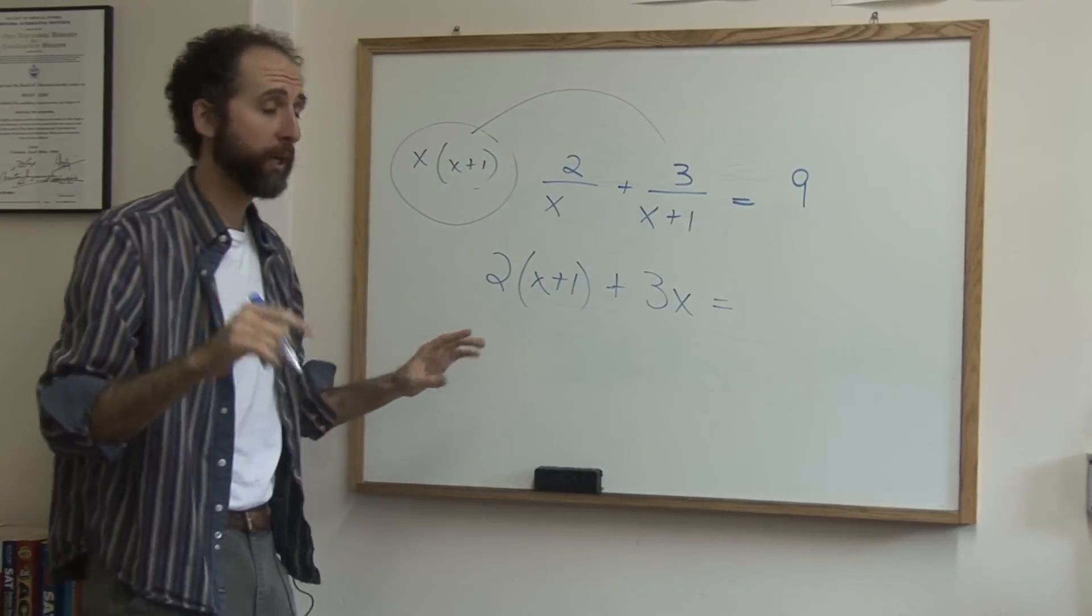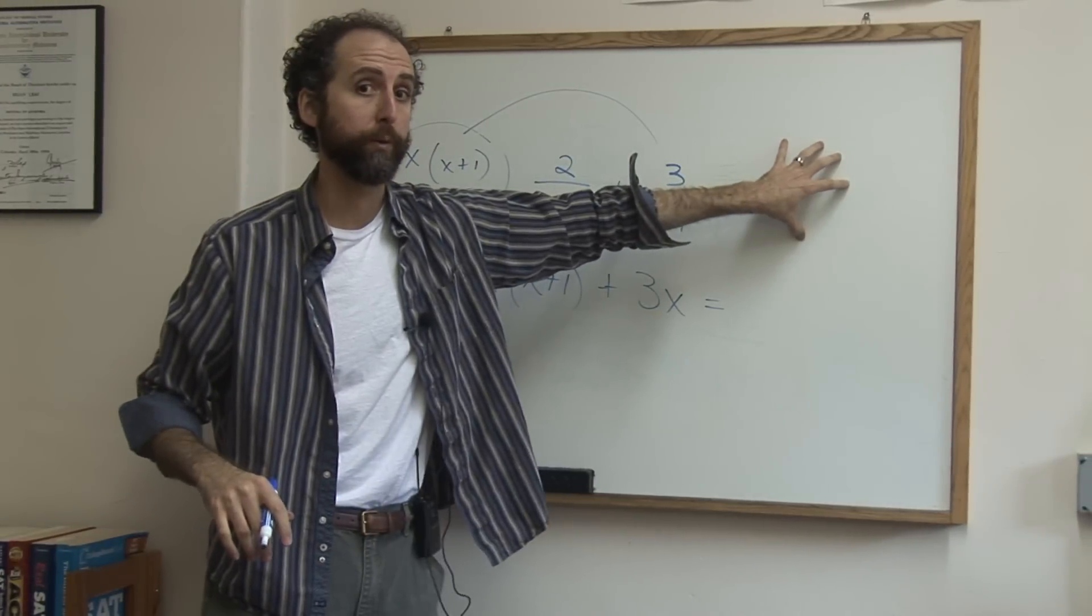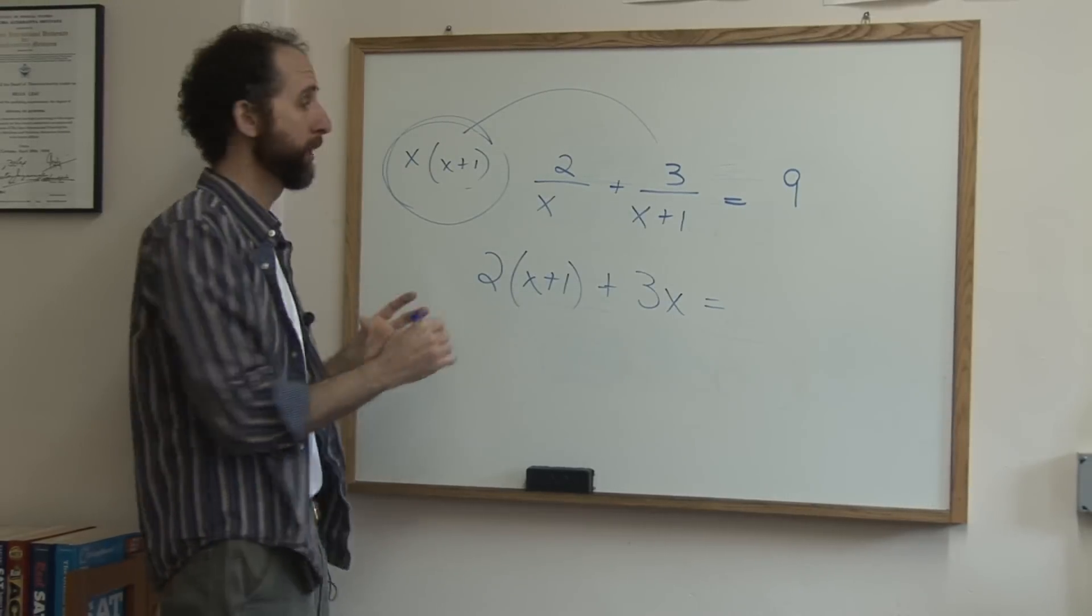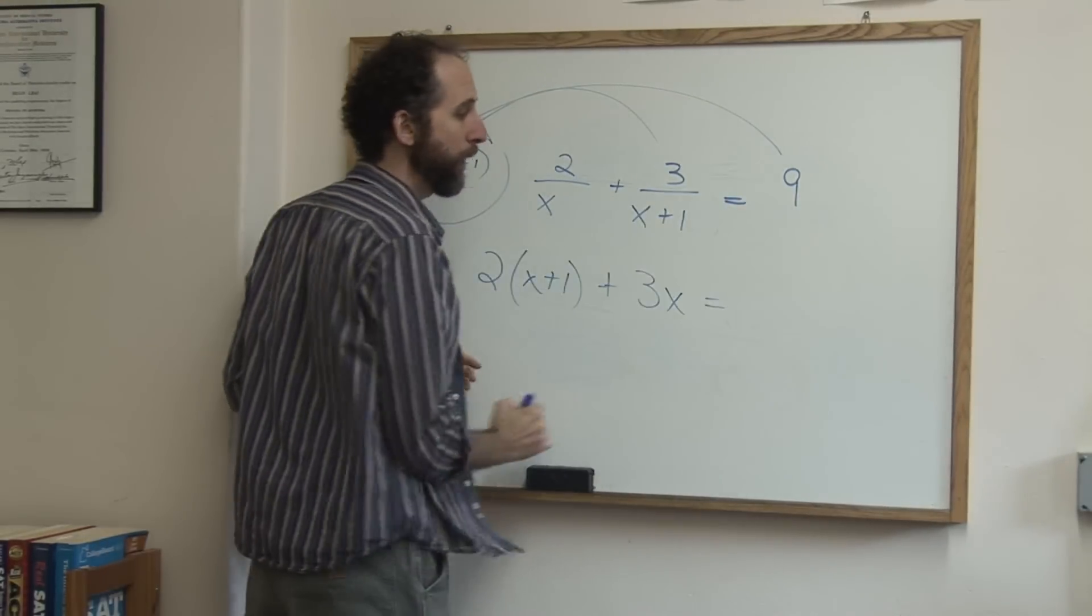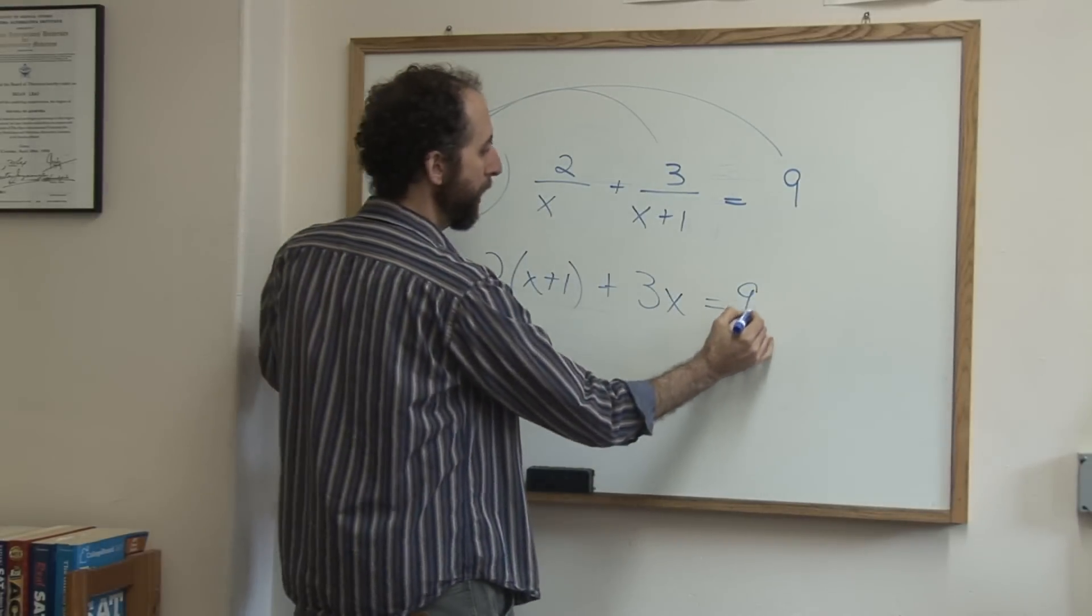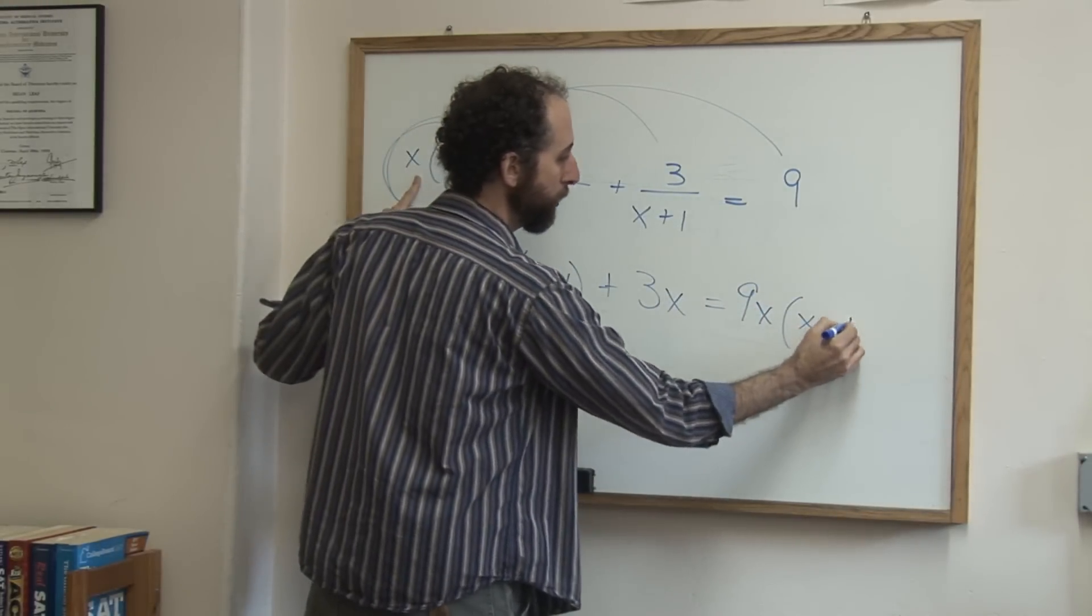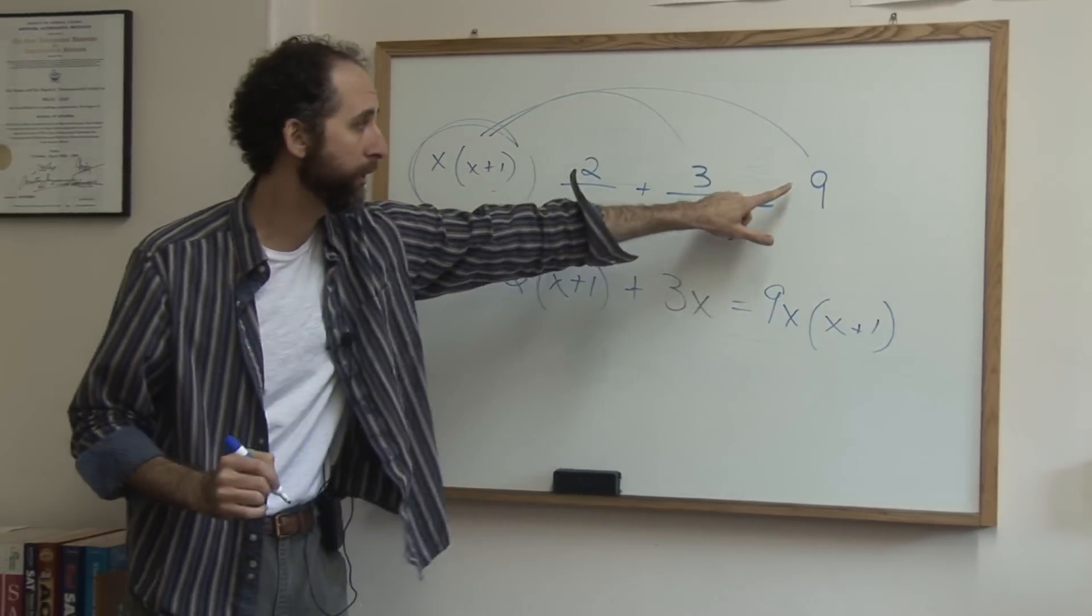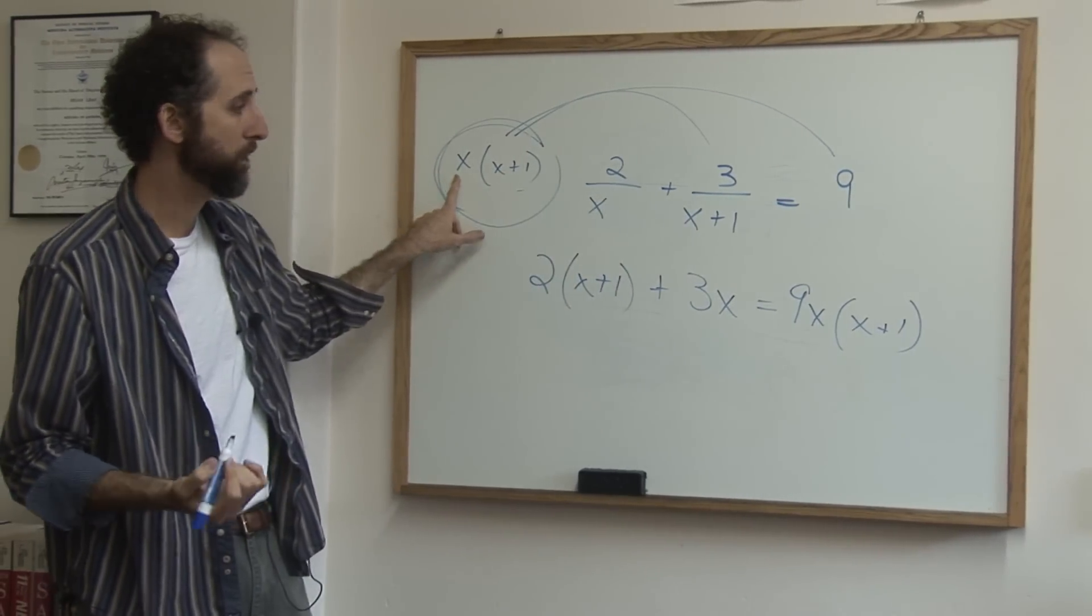Now you also have to multiply the 9 by that as well. Don't forget that. That's the most common careless error people make on this. So you're going to multiply this by the 9 as well, giving you, this will be the longest one, 9x times x plus 1.